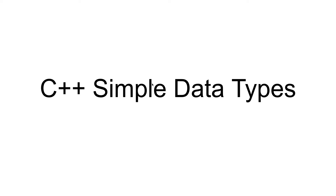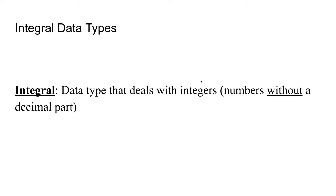Welcome. In this video, we will discuss C++ simple data types. The first simple data type we will talk about is the integral data type. The integral data type is a data type that deals with integers, and integers are simply numbers without a decimal part.